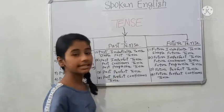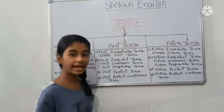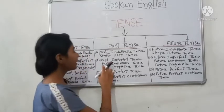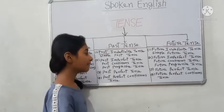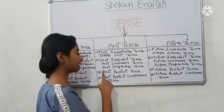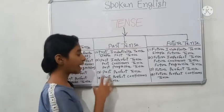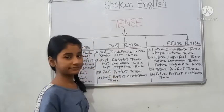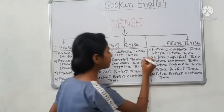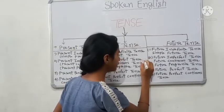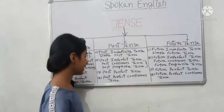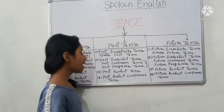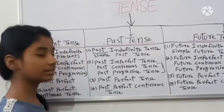Now let's look at Past Tense. First is Past Indefinite Tense — what is its nickname? Simple Past Tense. Next is Past Imperfect Tense, also called Past Continuous Tense or Past Progressive Tense. So Past Imperfect, Past Continuous, and Past Progressive all refer to the same tense.